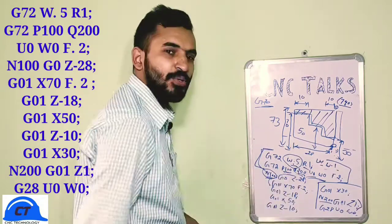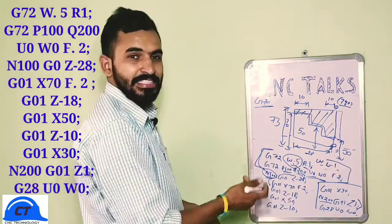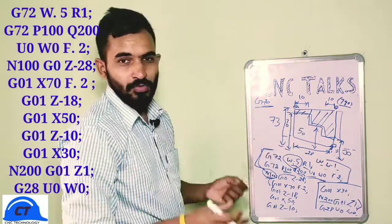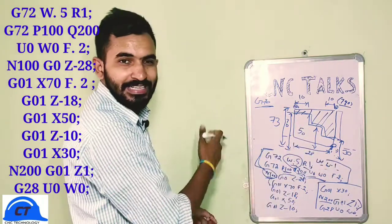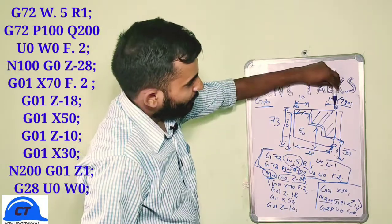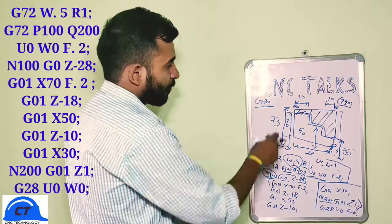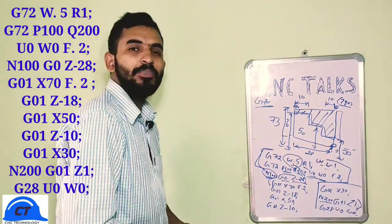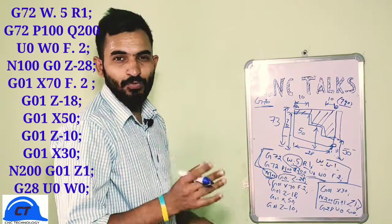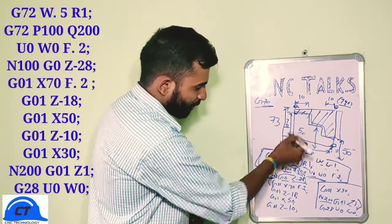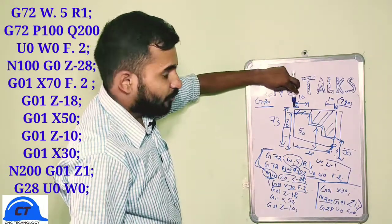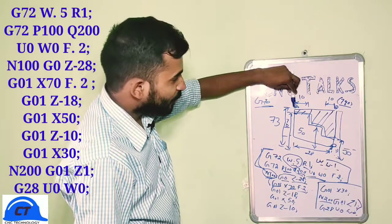Once inserting the syntax for G72, we start the toolpath program. Since our tool is at this position, we need to move it from here to the starting point of the toolpath, so we give G0 Z minus 28 — our tool rapidly moves to that position. From here we start cutting the component. Since we need to maintain our diameter to 70mm, we move our tool using G01 from this position to X70 with a feed rate of 0.2 — our tool moves slowly to that point.